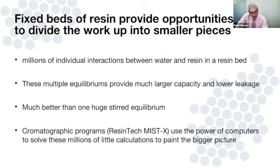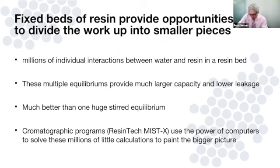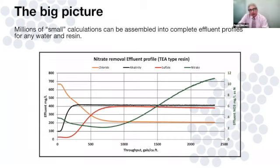There are about 5,000 resin beads in one milliliter of resin, and every one of those beads is interacting with the water separately. By doing millions of individual calculations we can compile a bigger picture that includes higher capacity and lower leakage — much better than a big stirred equilibrium. The same applies in regeneration; you can't regenerate effectively just by mixing resin with chemical. Chromatographic programs like Resintex-Mistex use the power of computers to solve these calculations.